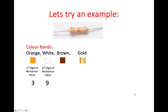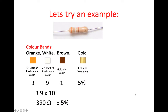Now the third band represents the multiplier value — brown is equivalent to 1. We know that gold, the fourth band, represents the resistor tolerance of 5%. So if we put that together, we have 39 multiplied by 10 to the power of 1, plus or minus 5%.